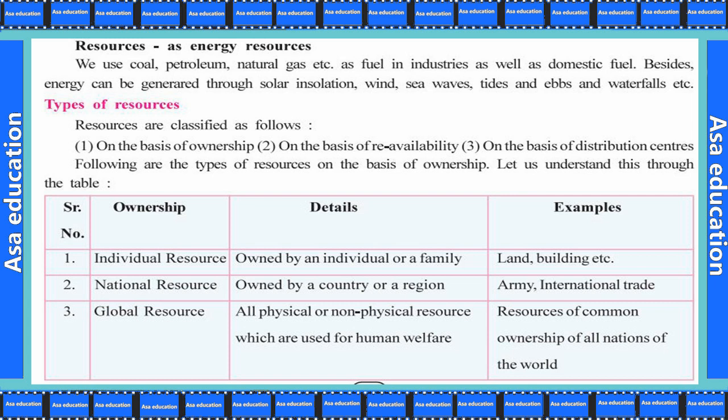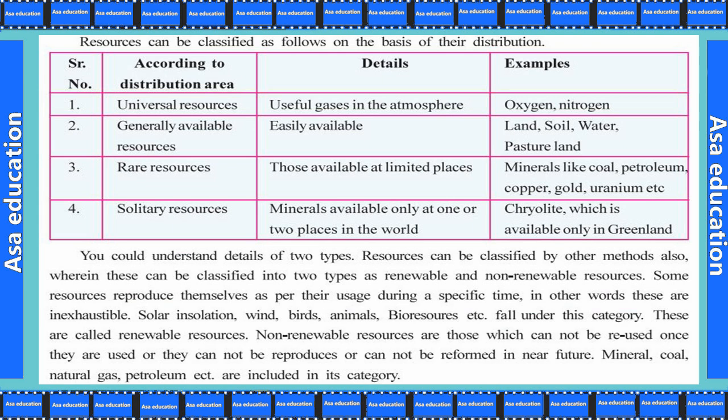Resources can be classified in the following ways: on the basis of ownership, on the basis of re-availability, and on the basis of distribution. On the basis of ownership, individual resources are owned by an individual or family, such as land and buildings. National resources belong to the country or a region, including the army and international trade. Global resources include all physical and non-physical resources used for human welfare under common ownership of all nations.